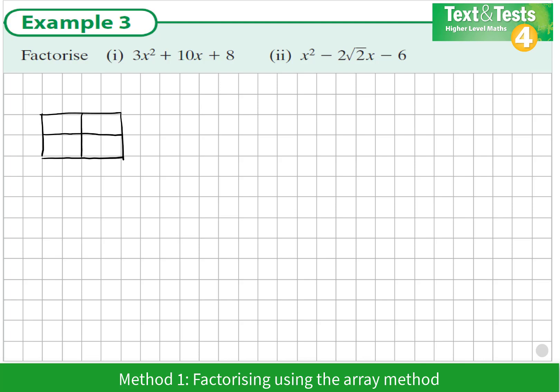We know from experience that the 3x² goes in the first box and the +8 goes in the opposite diagonal. We're looking to fill in the other diagonals. We know they multiply to be the same as this diagonal, so if we multiply 3x² by 8 we get positive 24x².